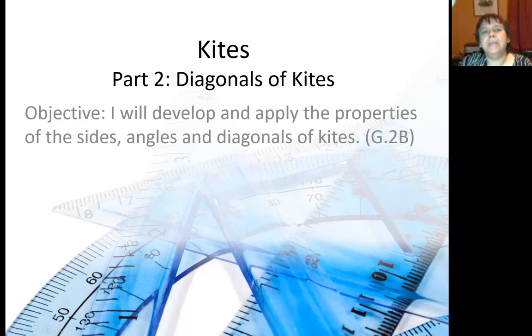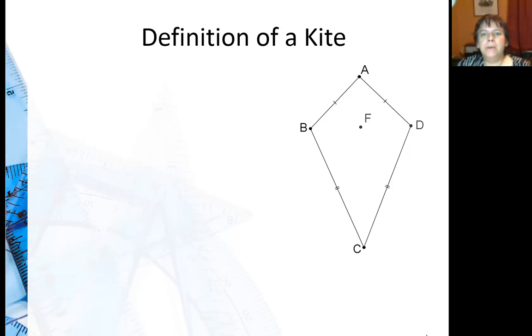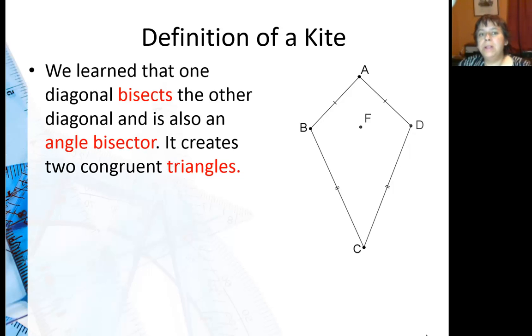Now we're going to look at some interesting properties of the diagonals of kites. We learned that one diagonal bisects the other diagonal. So this diagonal bisects, and it is also an angle bisector. You actually may not notice that it bisects the diagonal, but I'm going to show it to you in just a second.